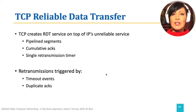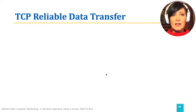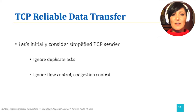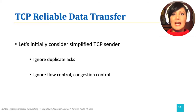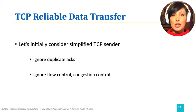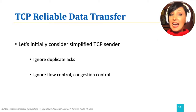To learn this process for TCP, let's first discuss a simplified scenario that ignores duplicate ACKs, ignores flow control, and ignores congestion control. We will discuss the simplified version first, and then we will add these mechanisms and their effect one by one.